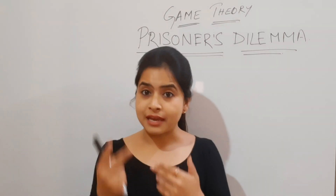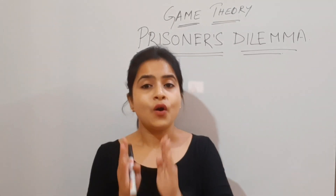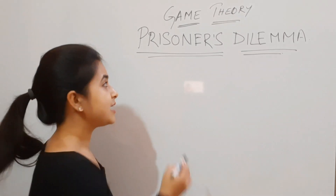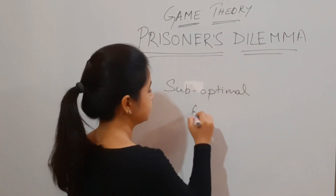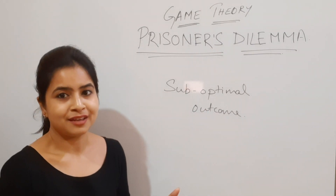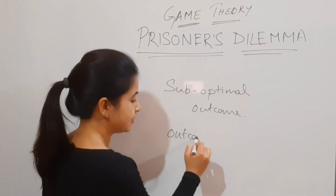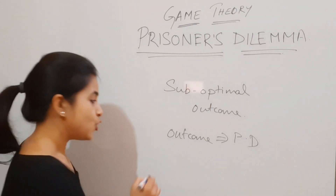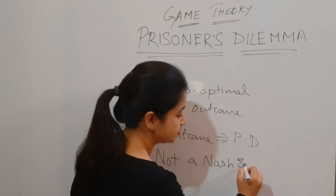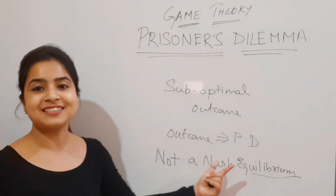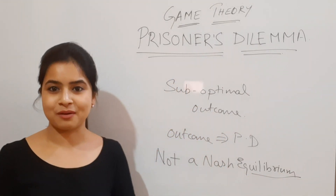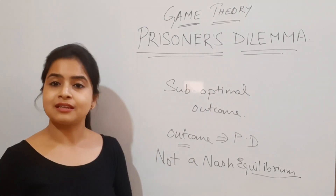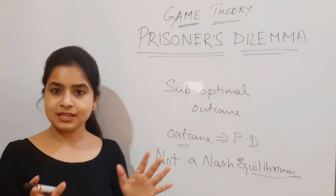The prisoner's dilemma is a game between two players — player A and player B, or row player and column player. The basic concept you always have to remember is that the outcome we get in prisoner's dilemma is always suboptimal. The outcome is not an optimal Nash equilibrium — meaning the players can do better than what they are ultimately choosing in this game.